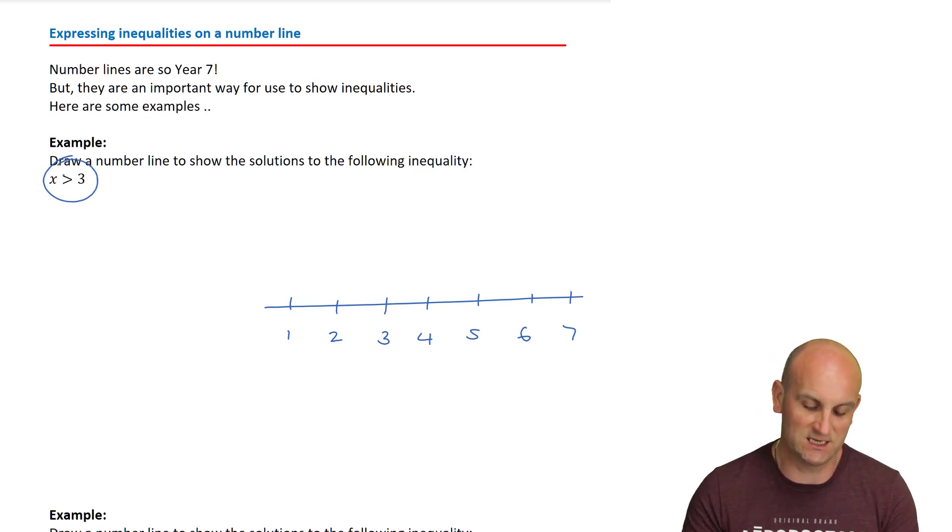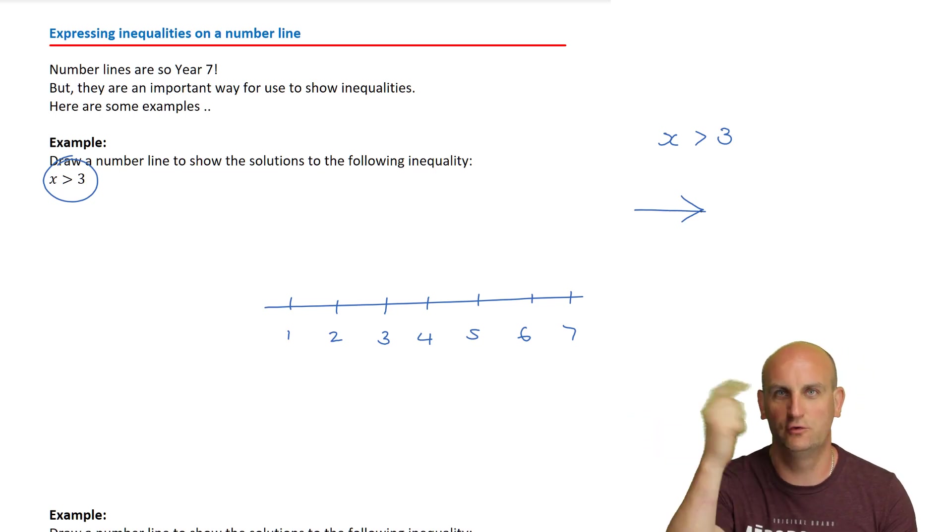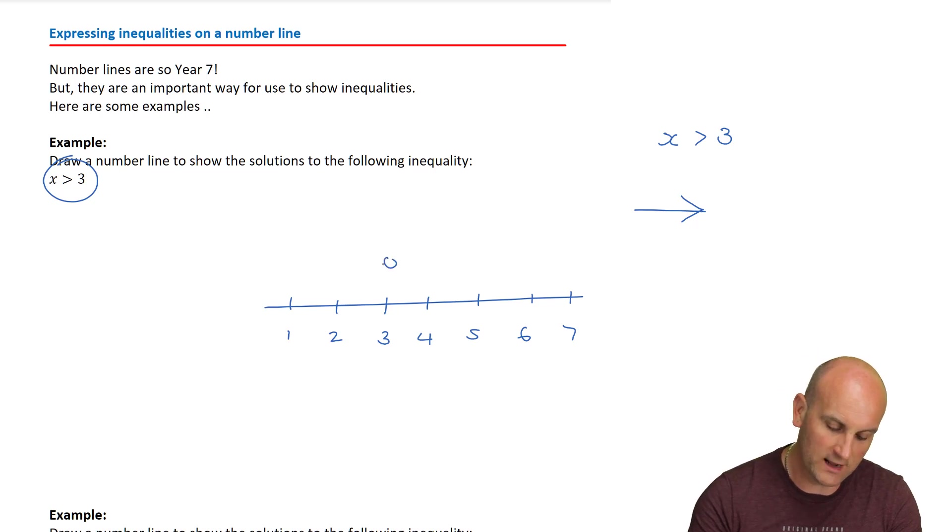We're going to draw a number line to show the solutions to the following inequality. In that situation, it wants us to show all the values of x that are greater than 3. Not greater than or including to 3. All of them that are greater than 3. There are a shed load of numbers that actually are greater than 3, 4, 5, 6, 7, 8, 9, 10, 11, 12 to infinity and beyond. But what about the decimal numbers 3.1, 3.11, 3.111? We could go on forever. So it's not practical in this situation to write all the numbers down. So we show them visually. The way we show them visually is x has got to be greater than 3. That greater than sign there, I actually think of as an arrow pointing to the right. So what I'm going to do is I'm going to put a circle at the 3 to say this is where I'm going to start. And then I'm literally going to join that to an arrow pointing right.